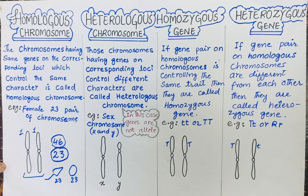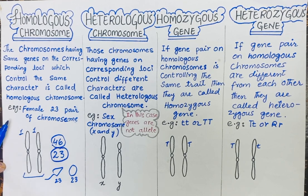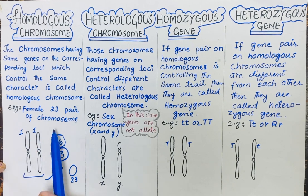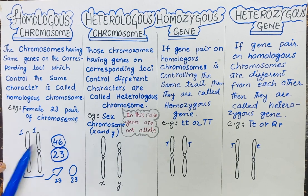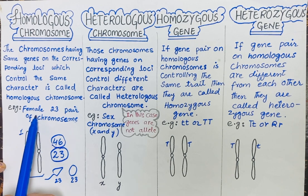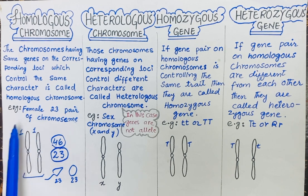So your chromosomes are called homologous chromosomes. For example, a female contains twenty-three pairs of homologous chromosomes. You can see that a female has a total of twenty-three pairs of homologous chromosomes.